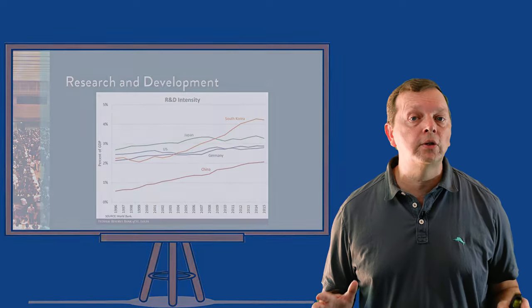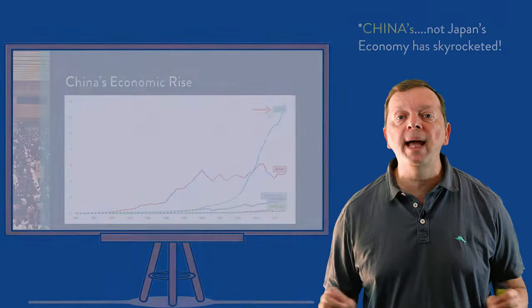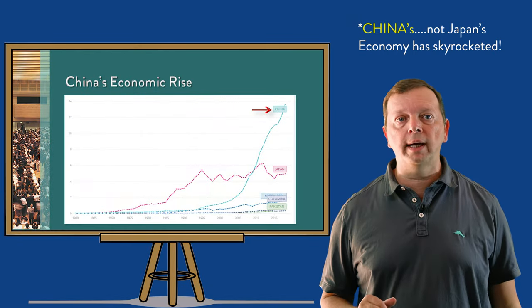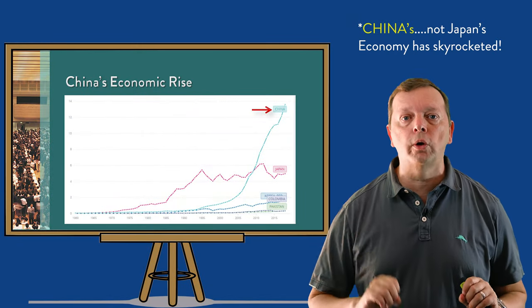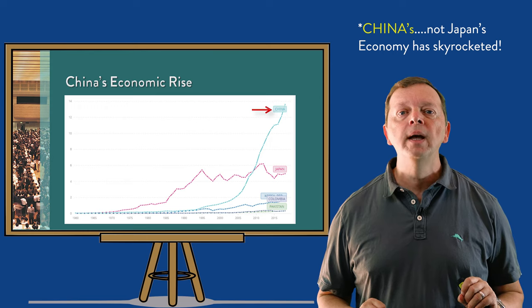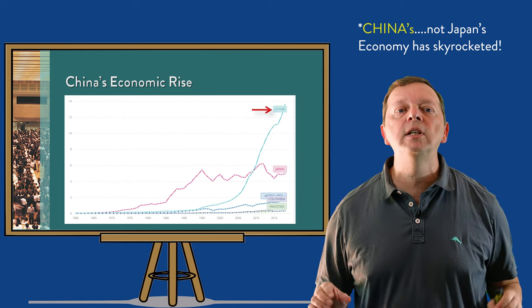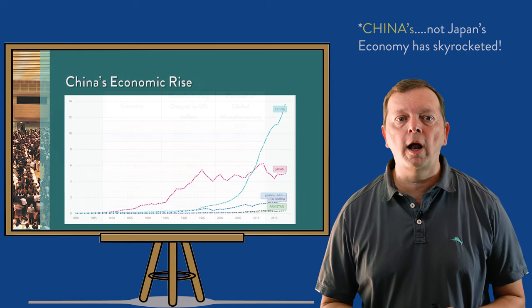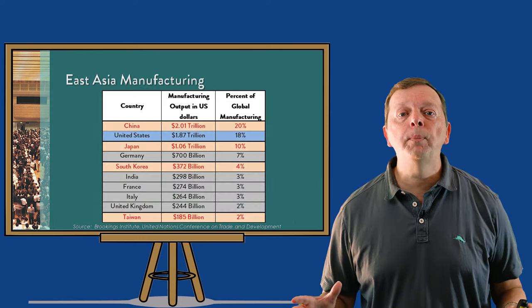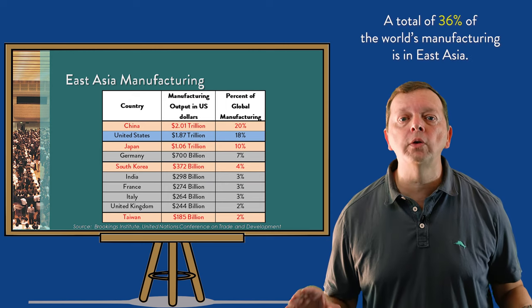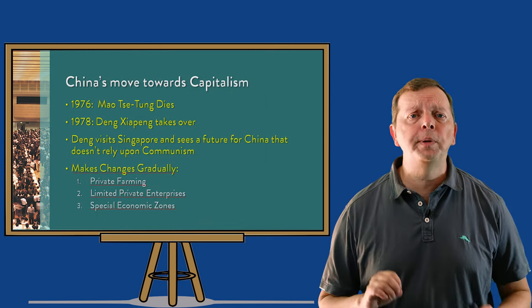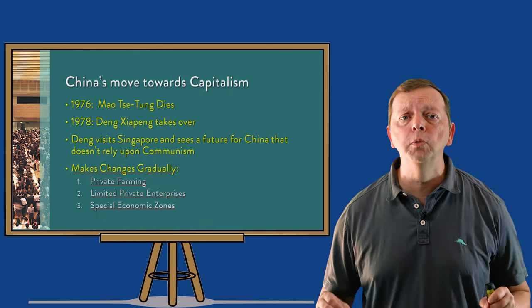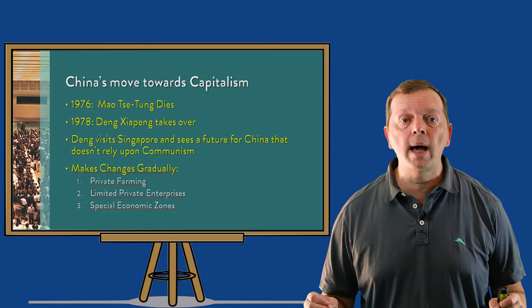While Japan and South Korea's economies have grown, China's has skyrocketed in the last couple of decades. Today, while the United States still is the world's largest economy, China is the world's second largest economy, and 20% of all manufacturing in the world is found in China today. China's economic rise has been launched due to its move towards capitalism.